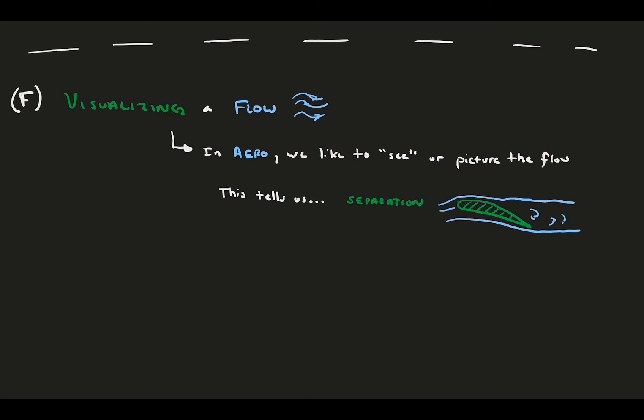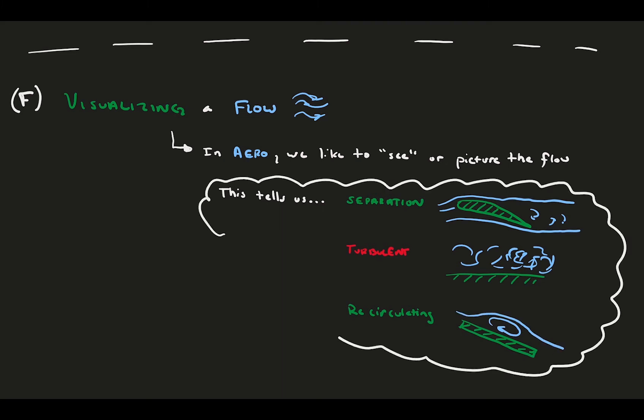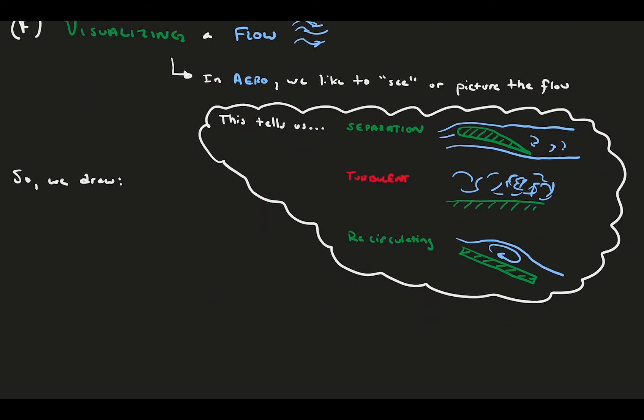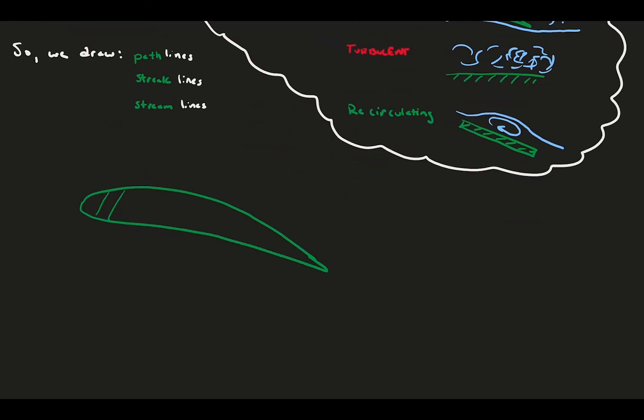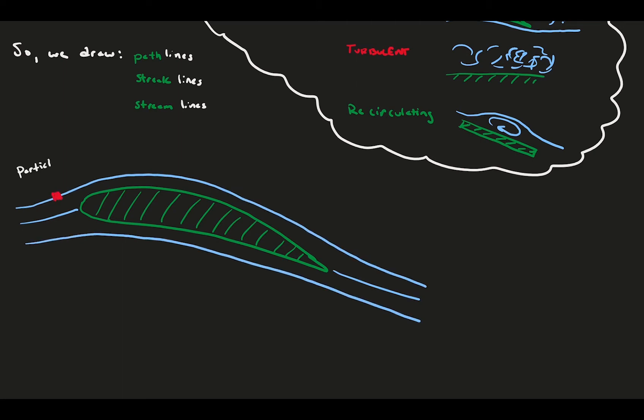This helps us diagnose possible flow problems or glean out interesting flow features. For example, FlowViz tells us where flow is separated, which could lead to a loss in aerodynamic performance, where flow is turbulent, causing high shear stress at the wall and possible drag, or recirculating, maybe there's a pesky separation bubble you'd like to get rid of. All of these can be visualized in a flow setting.